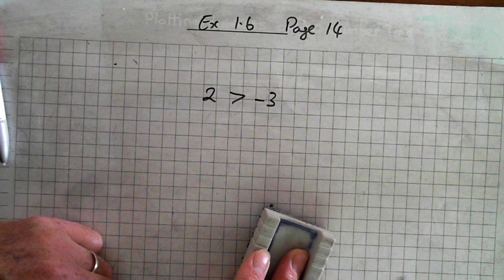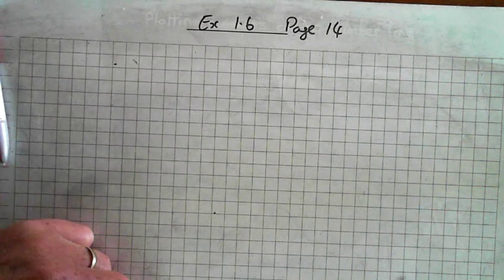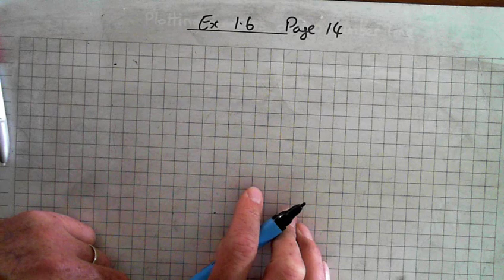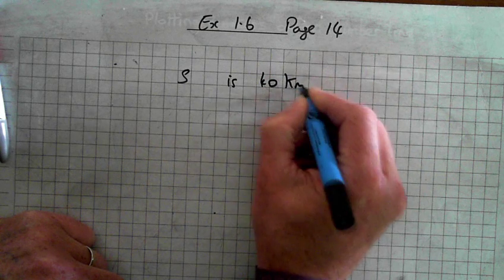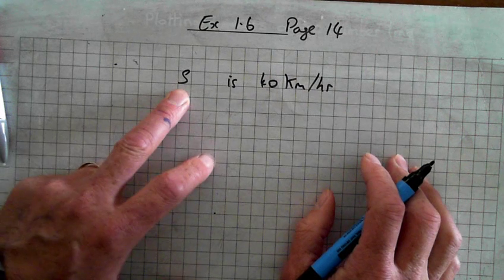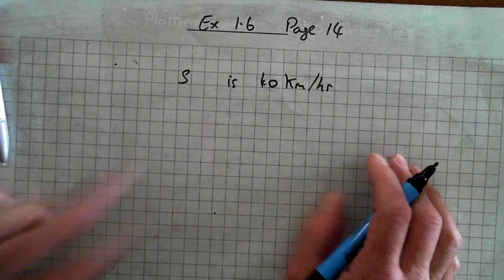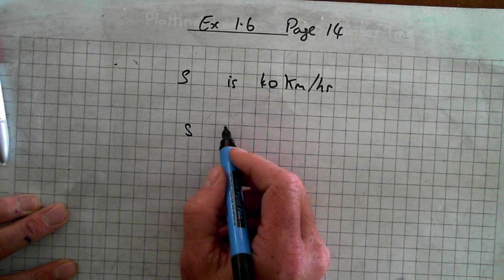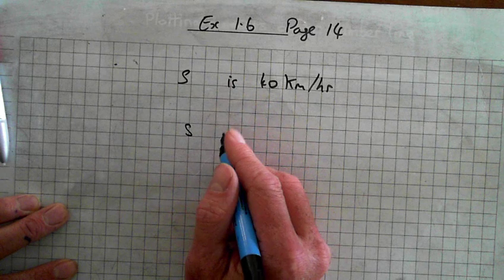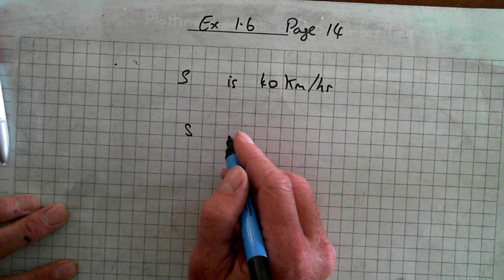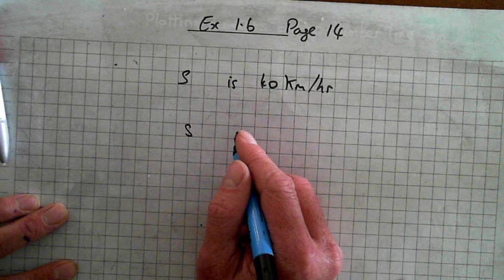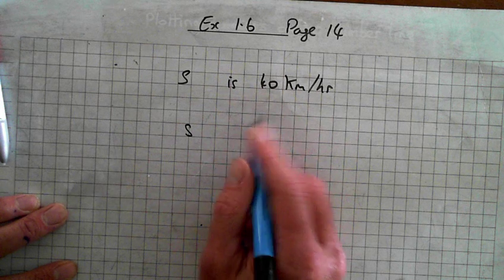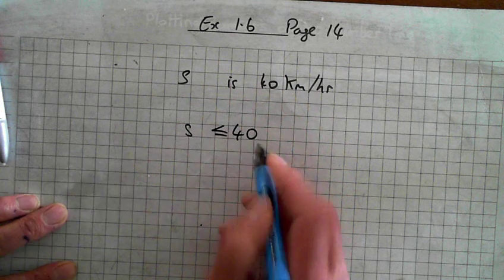Part 3: the speed limit S is 40 kilometres per hour. So you can't go any faster. S is less than — can you go less than 40? Can you go 40? Yeah. So S is less than or equal to 40 kilometres per hour.